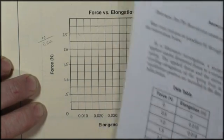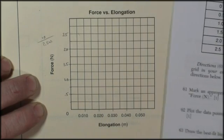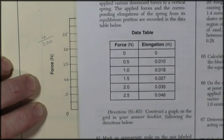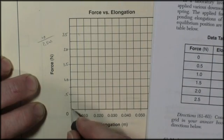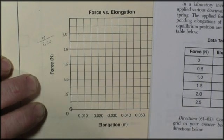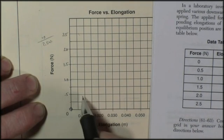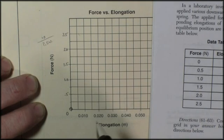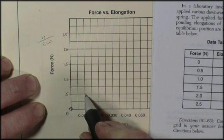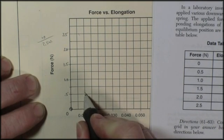Plot the data points for force versus elongation. That's worth a point. So now we look at our data. We've got zero, zero, so we plot that. We've got half a newton and 0.01, so that's right on the line. And it's really good to put a little x-y intercept and then a circle around it.